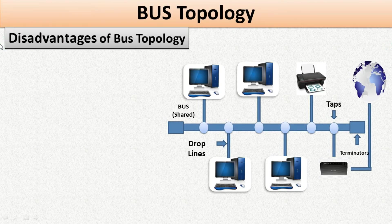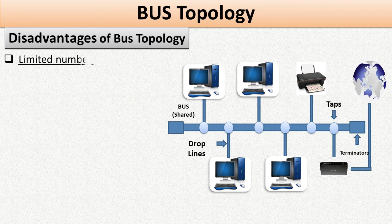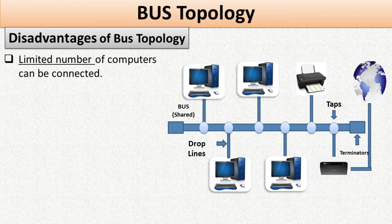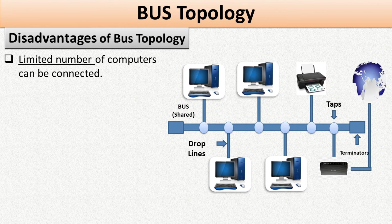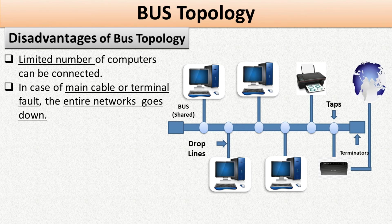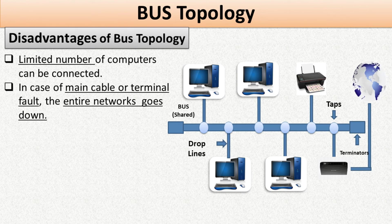Disadvantages of bus topology: Only a limited number of computers can be connected, because with the increase in the length of the central cable and the count of taps, the strength of the signal decreases. In case of a main cable or terminal fault, the entire network goes down — since all computers depend on the central cable for data frame transmission, if the central cable fails it paralyzes the whole network. Bus topology therefore has very little fault tolerance.